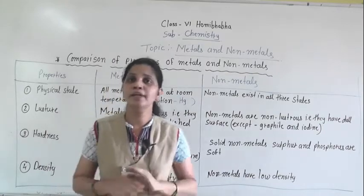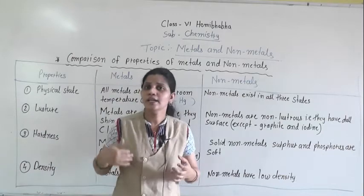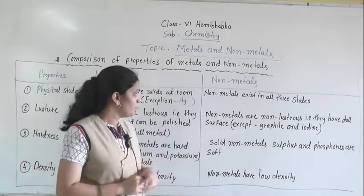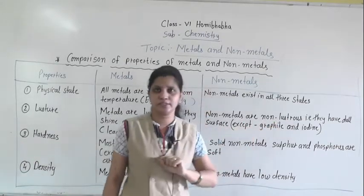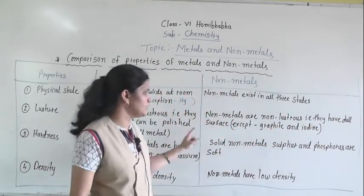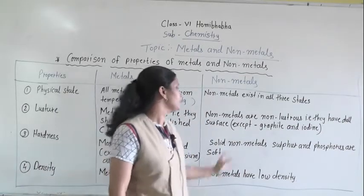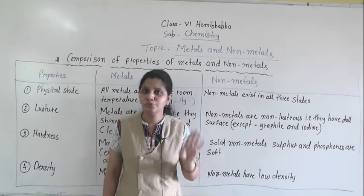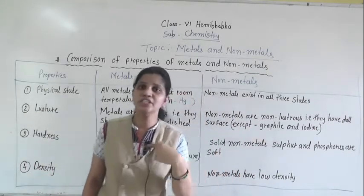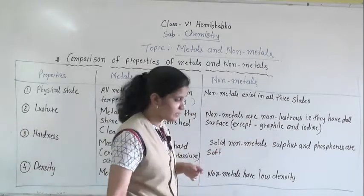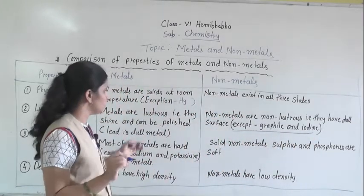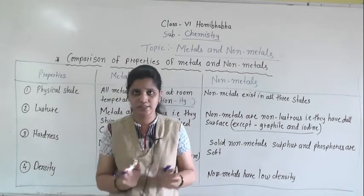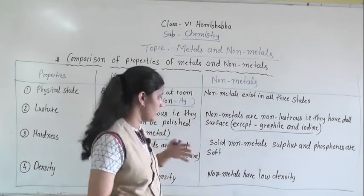The second physical property is lustre. Lustre means shine. Mostly all metals are lustrous — they shine and can be polished. We wear gold and silver jewellery because they have a special shine. But one exceptional case is lead — lead is a dull metal, it does not have shine. For non-metals: non-metals are non-lustrous, meaning they have a dull surface. But the exceptions are graphite and iodine — these two non-metals do have shine. Write this down as it is very important.